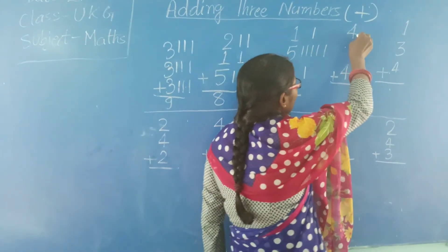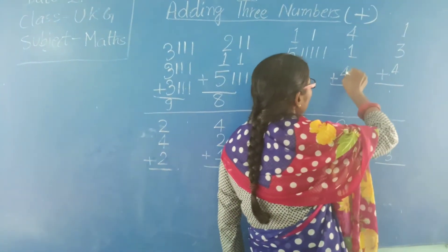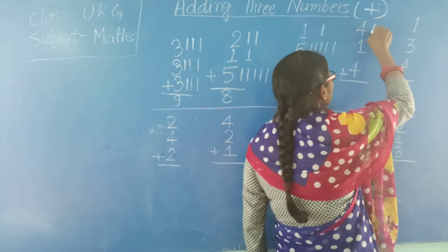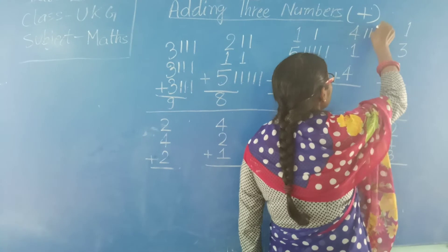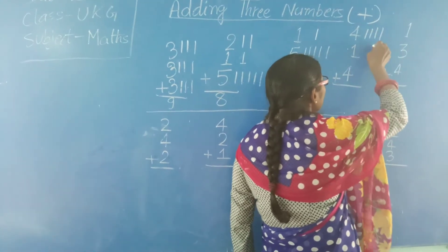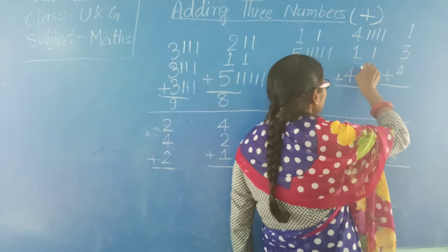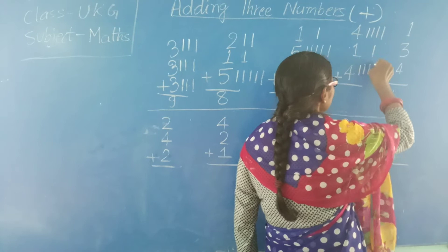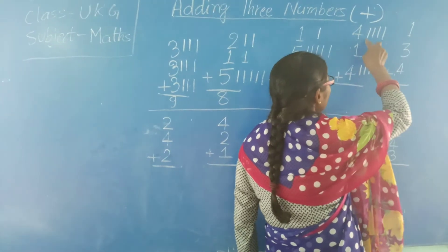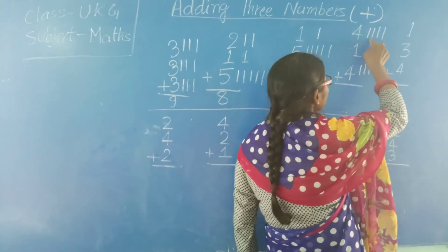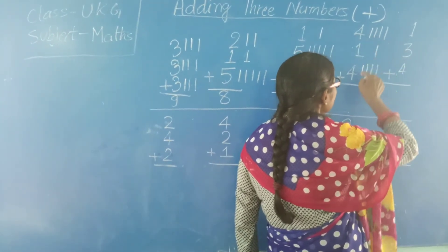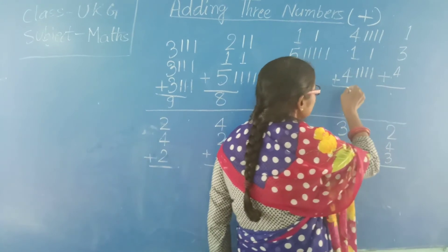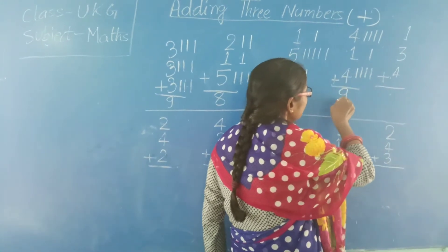Next: 4, 1, 4. Draw 4 lines: 1, 2, 3, 4. Then 1 line. Then 4 lines: 1, 2, 3, 4. Now count: 1, 2, 3, 4, 5, 6, 7, 8, 9. The answer is 9.